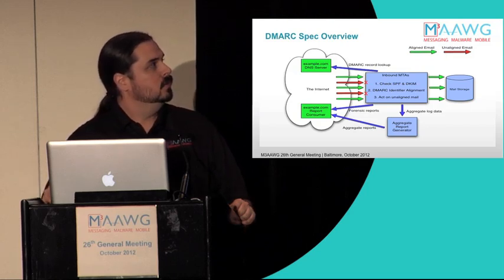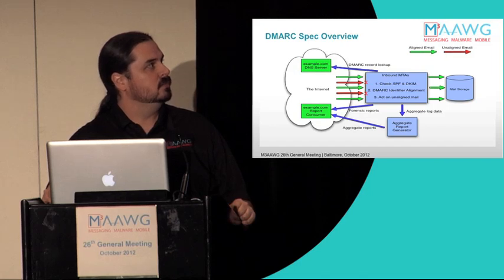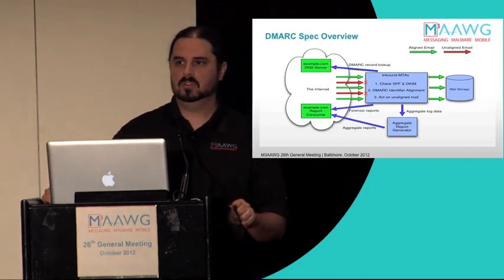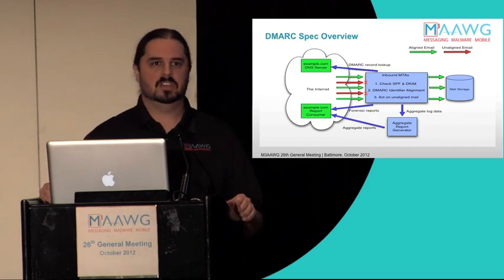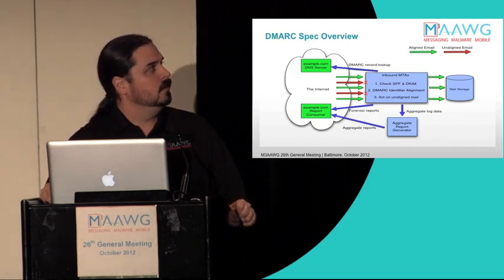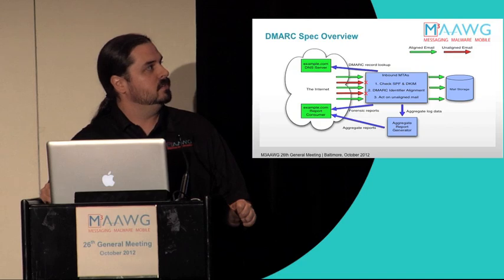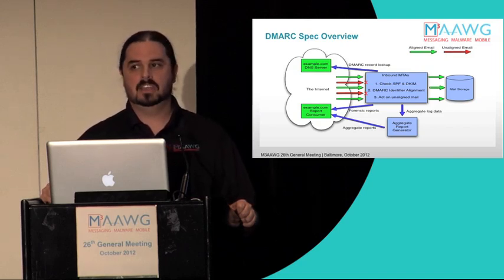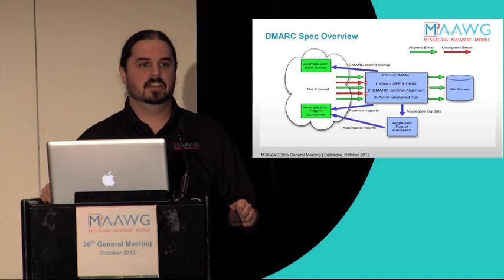When the mail arrives at an inbound MTA that enforces DMARC, first it checks SPF and DKIM — it does both of those as normal, as any other MTA would. Second, it checks for DMARC identifier alignment. And then it potentially takes action on any unaligned mail it finds.